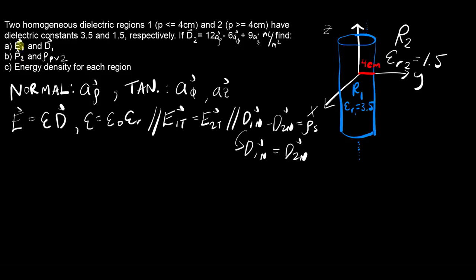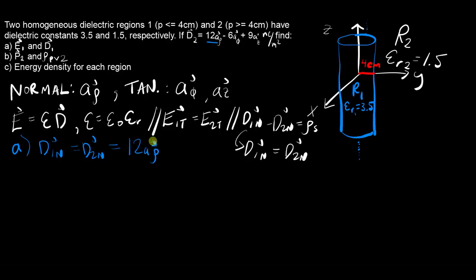Part a asks us to find E1 and D1. I'm going to try and find D1 first. D1n should be equal to D2n by the boundary condition relationship. The normal part is in the a-rho direction, so D1n equals 12 a-rho. This is all in nanocoulombs per meter squared — I'll leave units for the final answer.